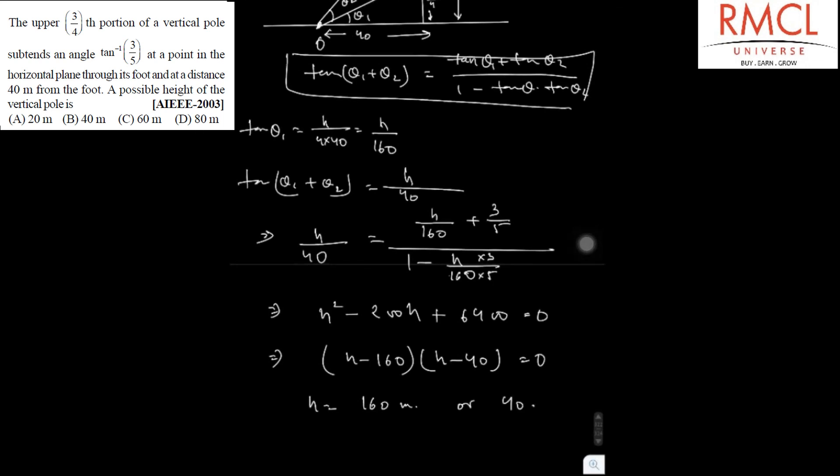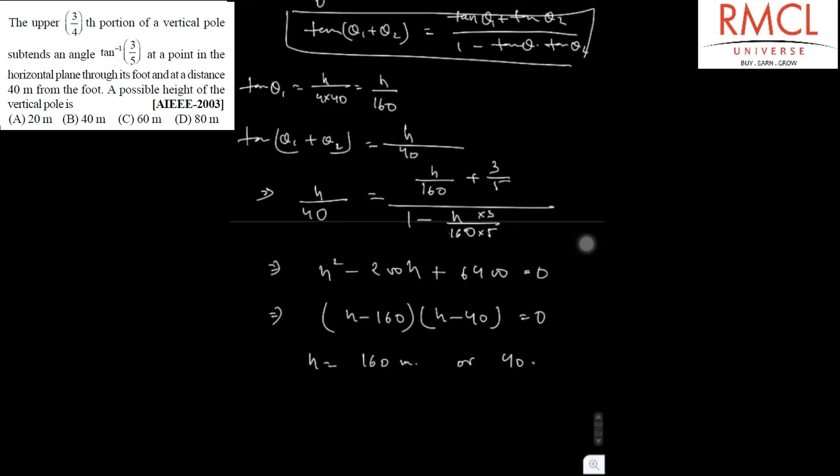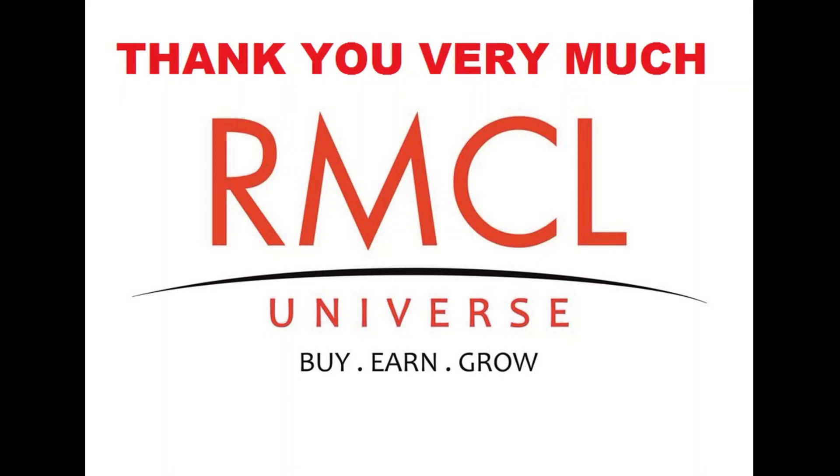So in option we have 40 meter. So 40 meter is correct. Therefore the correct option is option b. h is equal to 40 meter.